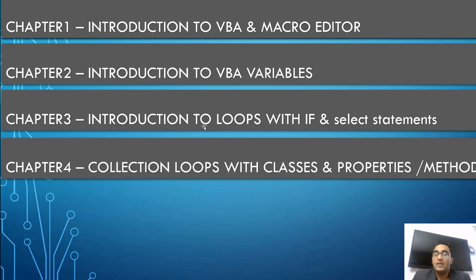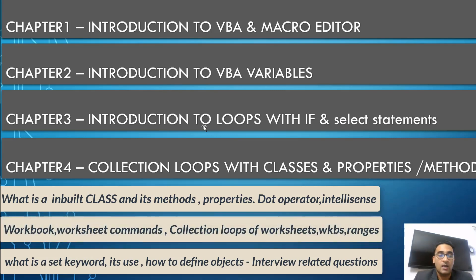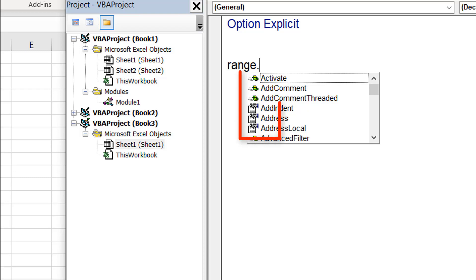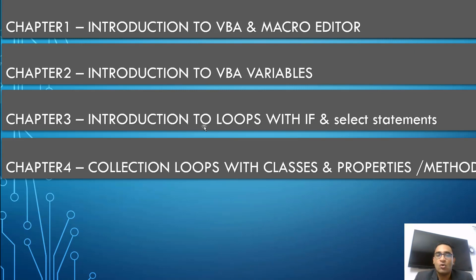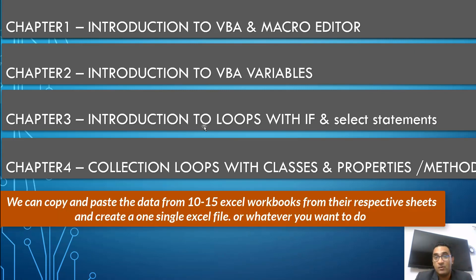Then we start with collection loops, classes, properties, and methods. In VBA, when you write something like 'As Worksheet', 'As Range', or 'As Chart', why do you write it? What does the dot operator signify? When you use the dot, you see a dropdown with two different icons — one with a hand sign and one with a tilted yellow box — which we call properties and methods. We'll cover objects, classes, workbooks, worksheets, and tables. After this topic you'll be able to compile data from ten different Excel files.